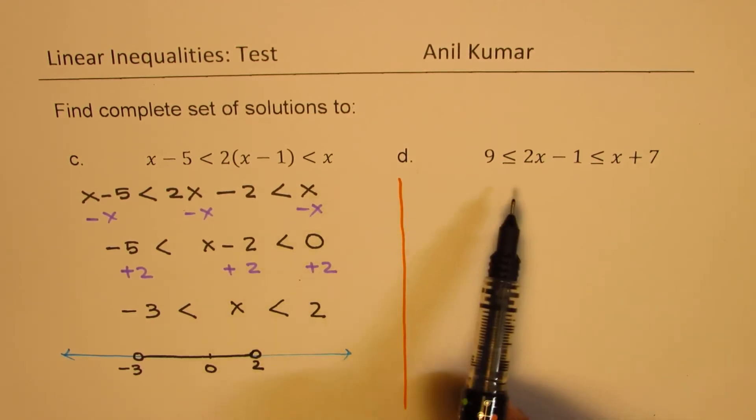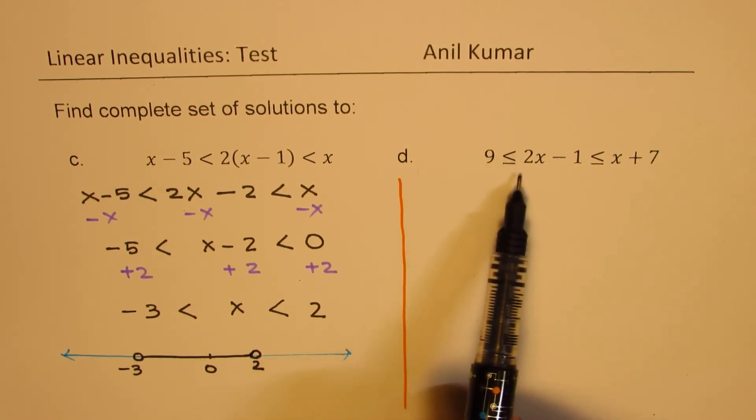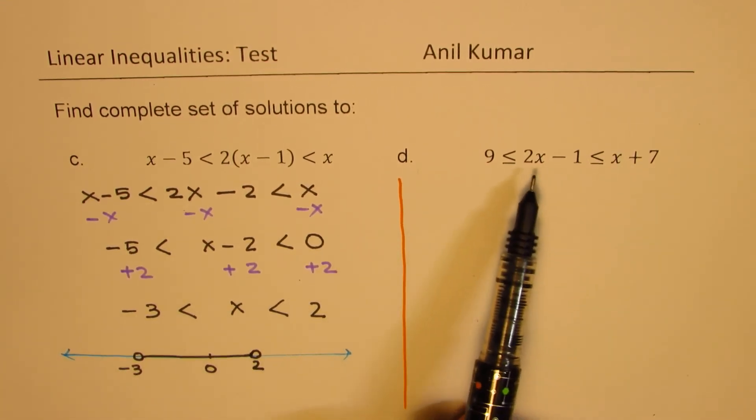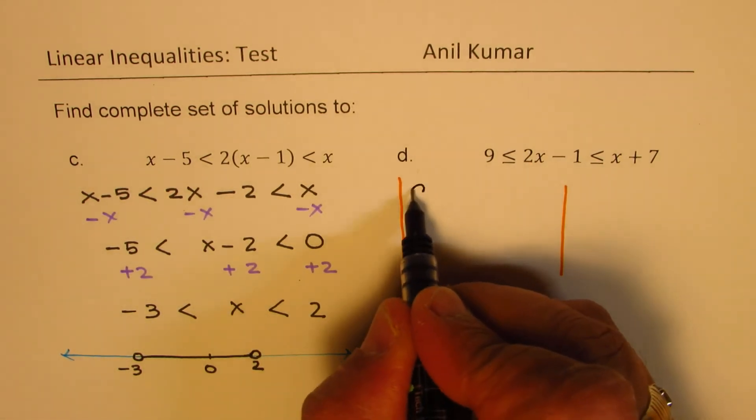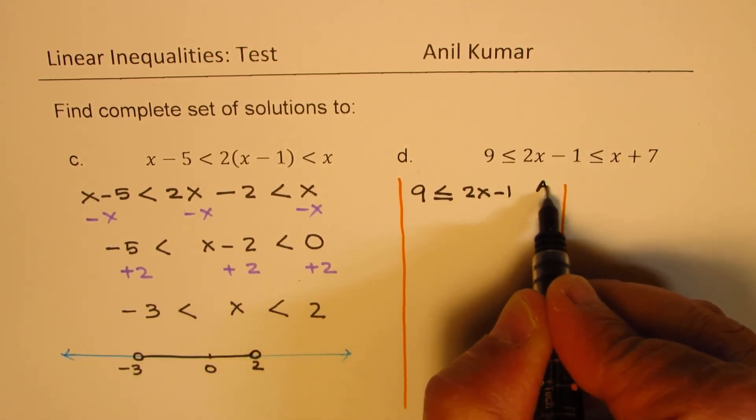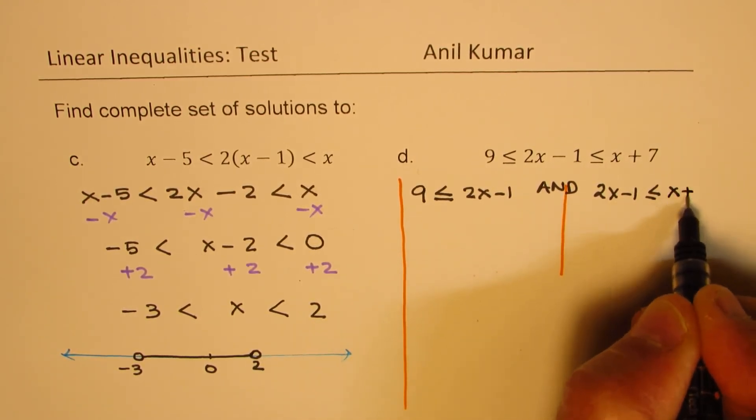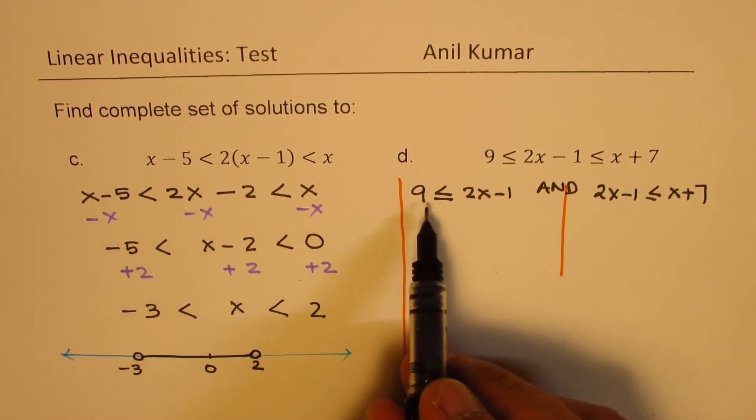Now part d is very typical and not easy to solve. We have 9 is less than equal to 2x minus 1 which is less than equal to x plus 7. Now in this case you cannot isolate x. So here what we do is that we actually work with two separate equations. So one will be 9 is less than equals to 2x minus 1, and we also want that 2x minus 1 should be less than equal to x plus 7. So we are working with two equations simultaneously and intersection of these will be the solution.